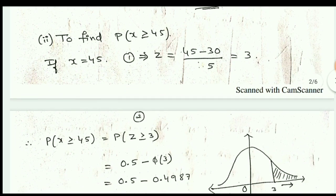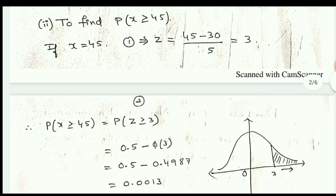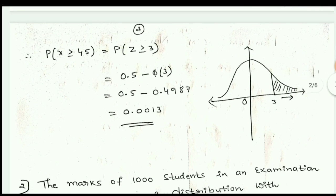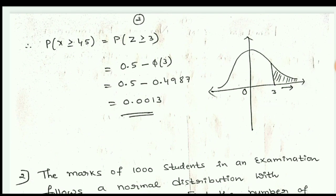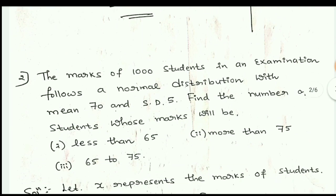The second part asks for P(x ≥ 45). Substitute x = 45 into equation 1: z = (45 − 30) / 5 = 3. So P(x ≥ 45) = P(z ≥ 3). On the graph, the area to the right of 3 equals the total right-side area minus the area from 0 to 3: 0.5 − φ(3) = 0.5 − 0.4987 = 0.0013.